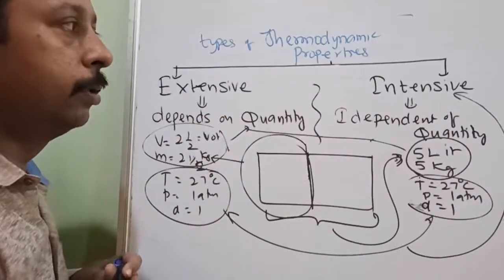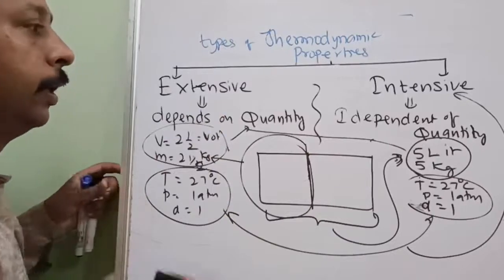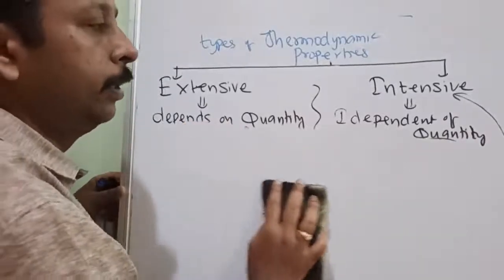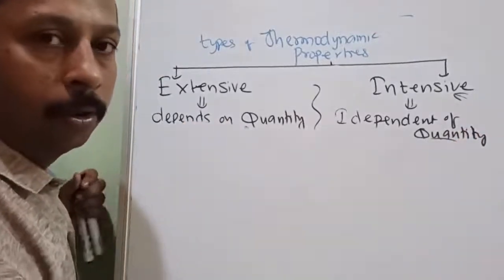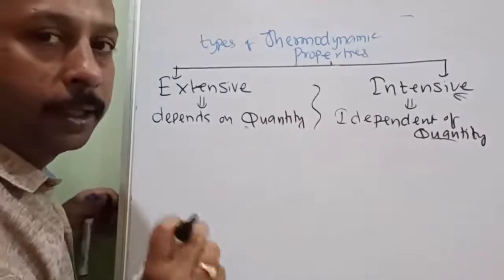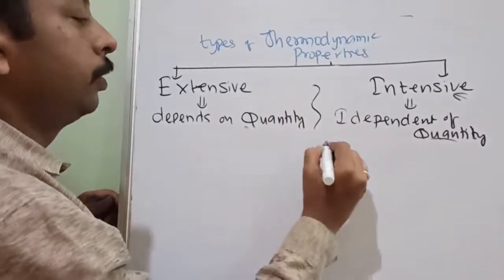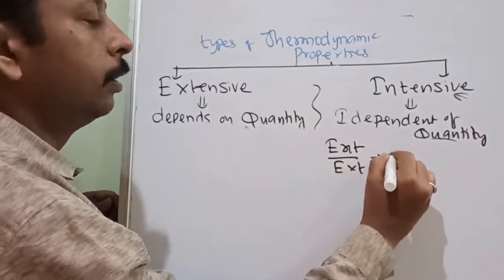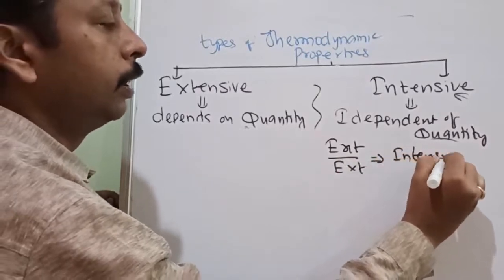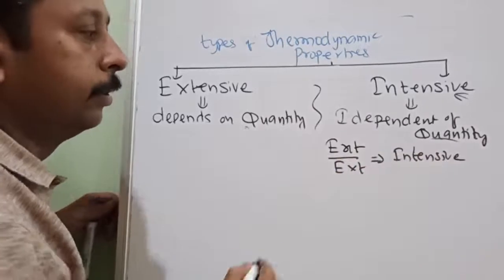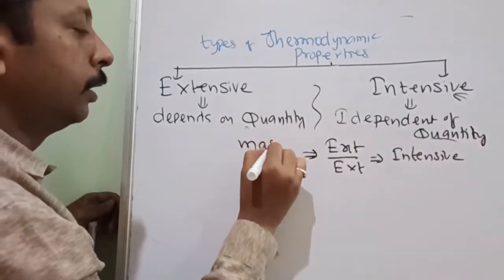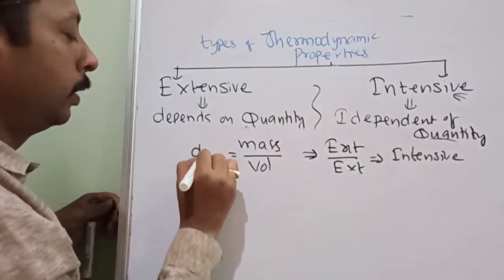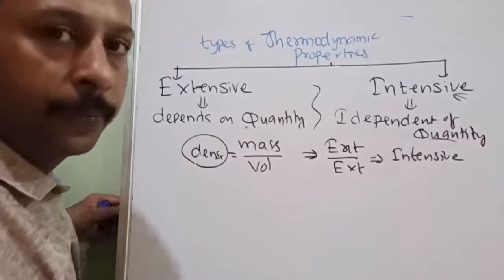Here is a simple technique: the ratio of two extensive properties gives an intensive property. For example, mass is extensive and volume is extensive. Mass divided by volume gives density, which is intensive. So the ratio of two extensive properties will be intensive.